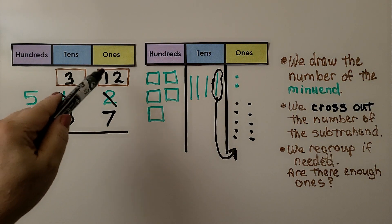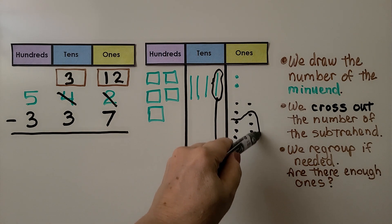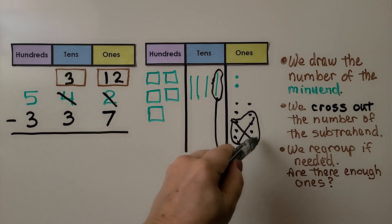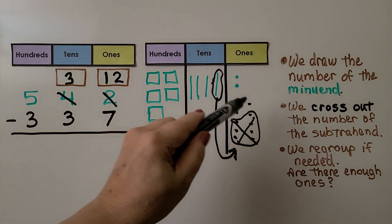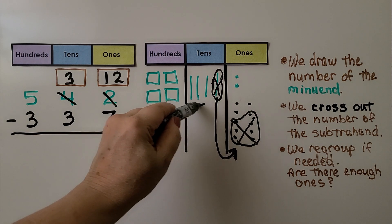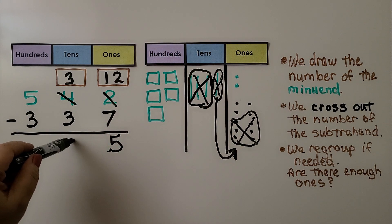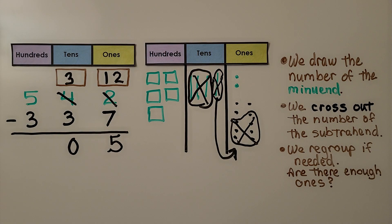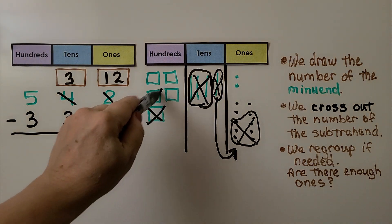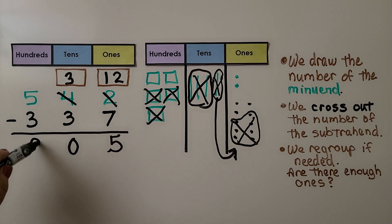Now we're going to do twelve minus seven. We take seven away — three and four makes seven — we cross those out because we took them away. That leaves five ones. Now we need to take three tens away, so we take away the three that are here, leaving zero tens. Now we take away three hundreds, and that leaves us with two hundreds. Five hundred minus three hundred is two hundred. Our answer is two hundred five.